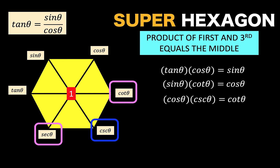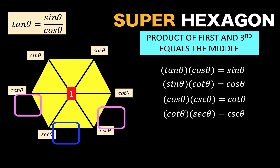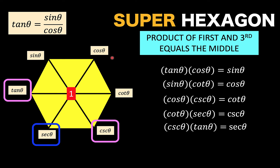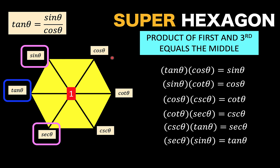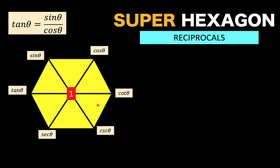Continuing to rotate and multiply the first and third functions to get the middle trigonometric function adds another six identities, bringing our total to 18 generated without memorizing any of them — except of course constructing the super hexagon. Next, let's look at the reciprocal identities.